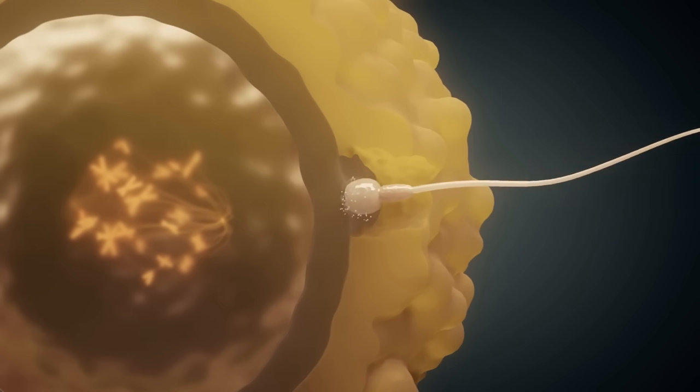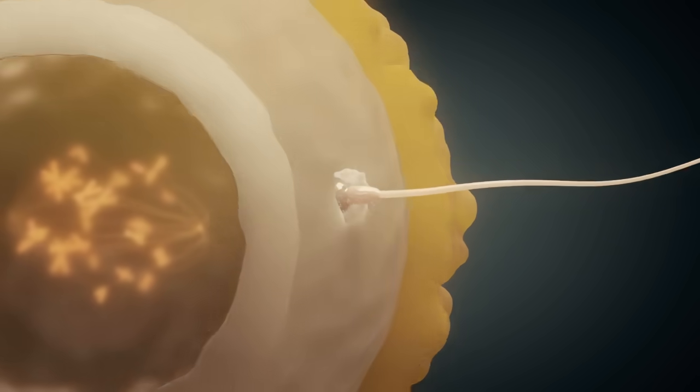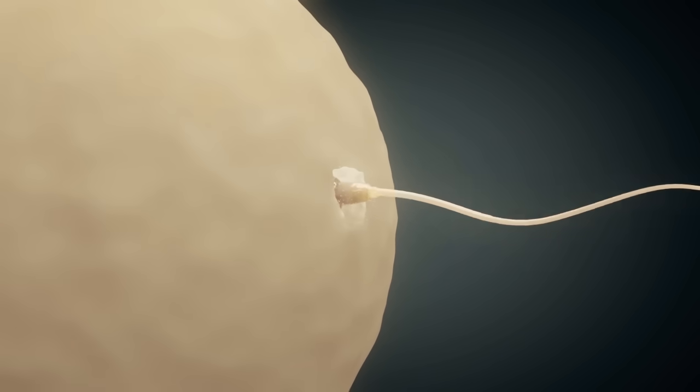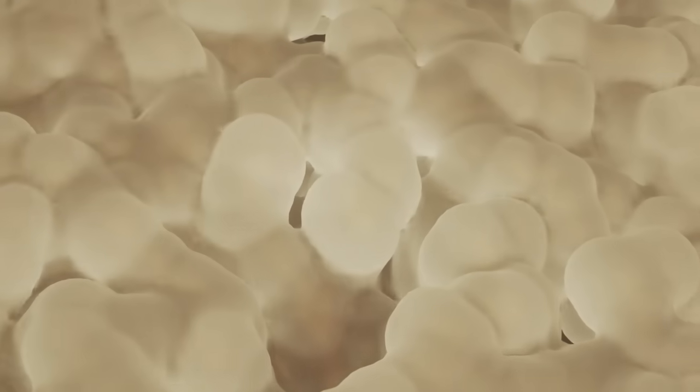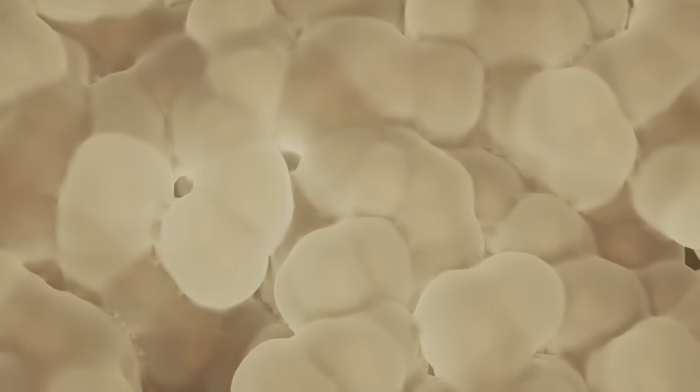The sperm cell penetrates corona radiata and zona pellucida, resulting in the degradation of the acrosome cap. Upon entering the cytoplasm, fertilization occurs, resulting in activation. Activation causes, among other things, a structural change of the zona pellucida so that no further sperm can penetrate.